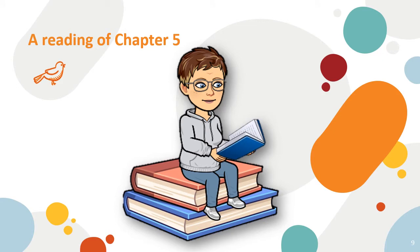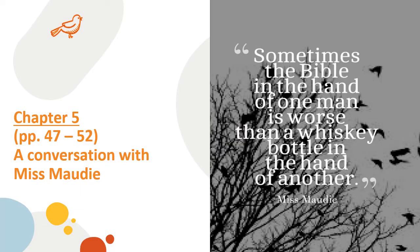In chapter five, we see how Scout feels the absence of a mother figure. As Jem and Dill play together and form a strong bond this summer, Scout is often at a loose end. She ends up talking to Miss Maudie Atkinson, one of the maternal roles in her life. Chapter five — I'm skipping the beginning of the chapter and going straight to page 48, the second paragraph.